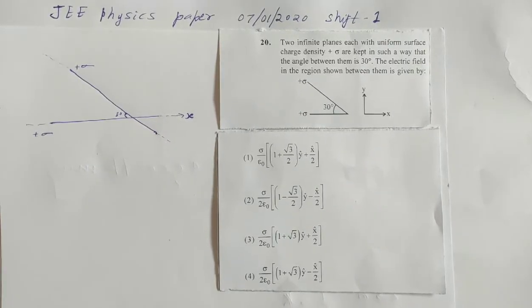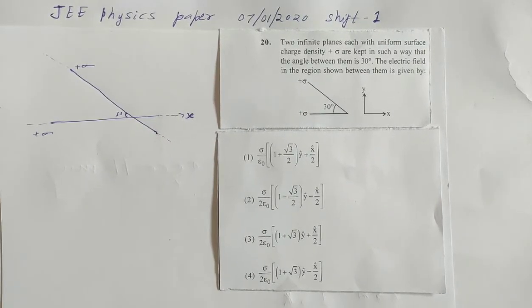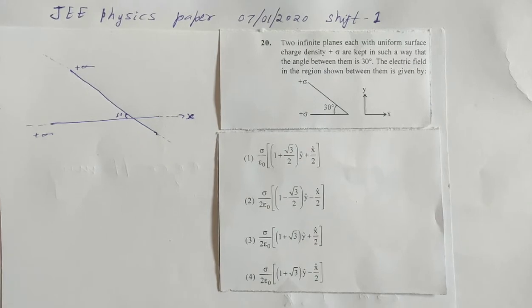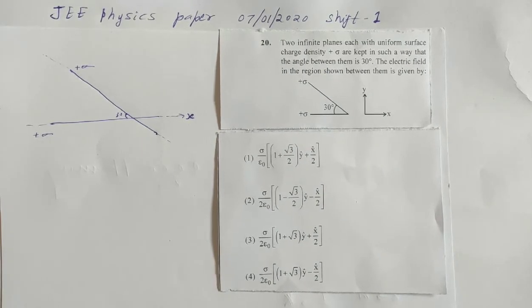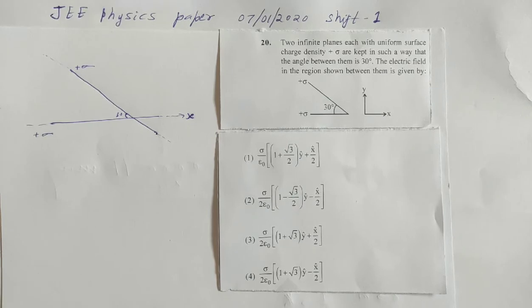JEE Physics paper 7th gen 2020 shift 1, question number 20. Two infinite planes, each with uniform surface charge density sigma, are kept in such a way that the angle between them is 30 degrees. The electric field in the region shown between them is given by — we need to find it.